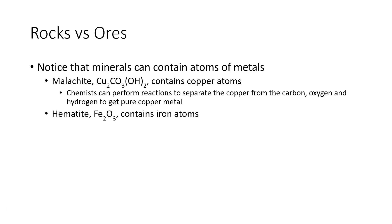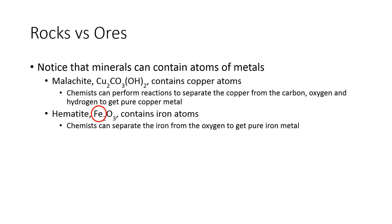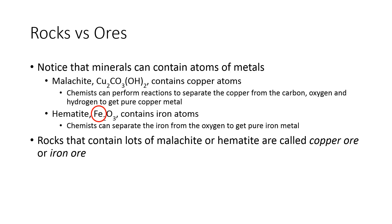Hematite contains lots of iron atoms — there they are in the chemical formula. Just like we were able to separate copper from malachite, we're able to separate iron from hematite. We separate the iron atoms from the oxygen atoms, and that gives us iron metal that we could then use to make steel, which we can sell. So that means rocks that contain lots of malachite are called copper ore, and rocks that contain lots of hematite are called iron ore.